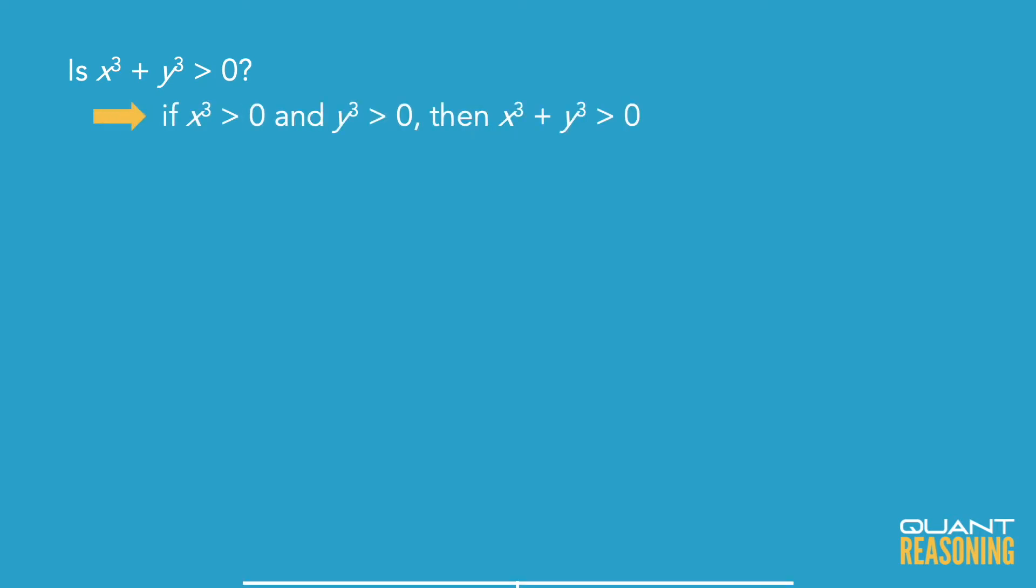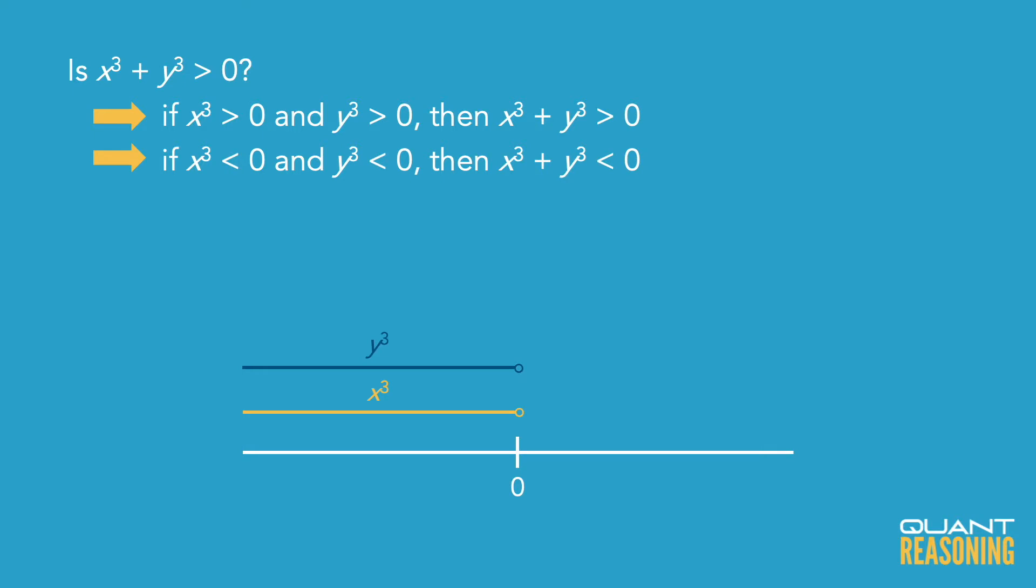If x and y are both negative, then x³ and y³ would both be negative, and that would lead us to a definite no, because the sum of two negative numbers is not greater than zero.